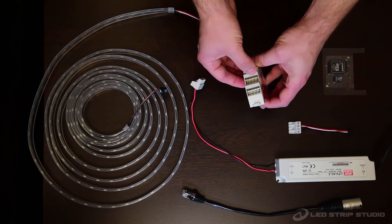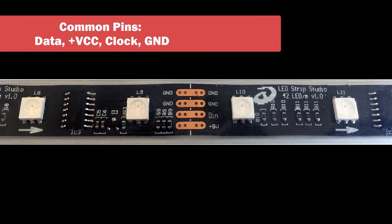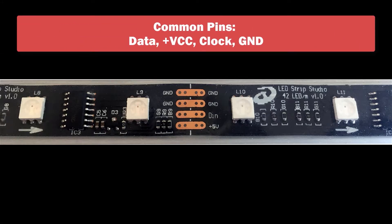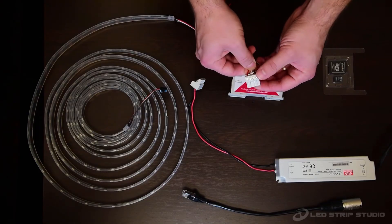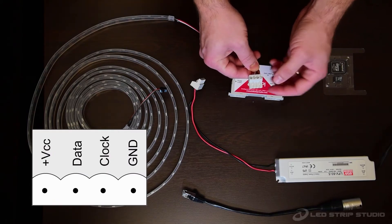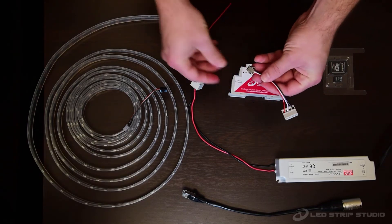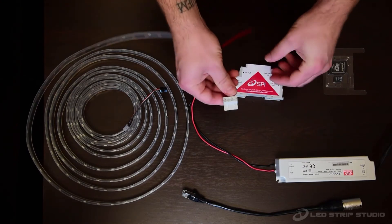First we will show you how to connect the LED strip to the controller. Each LED strip has a specific pin order which is indicated directly on the strip. Always use a power supply with the right voltage so that you won't damage your LED strip. Here is a pinout of the connector included with your SPI LED controller package.